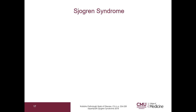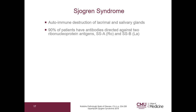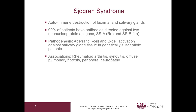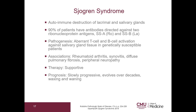Sjogren's syndrome is autoimmune destruction of lacrimal and salivary glands. 90% of patients will have Ro and La antibodies. The pathogenesis is aberrant T and B cell activation against salivary gland tissue in genetically susceptible patients. Associations include rheumatoid arthritis, synovitis, diffuse pulmonary fibrosis, and peripheral neuropathy. Therapy is generally supportive. This is a slowly progressive disease that can evolve over decades with a waxing and waning clinical course. Approximately 5% of patients will develop a lymphoma secondary to chronic B cell activation.